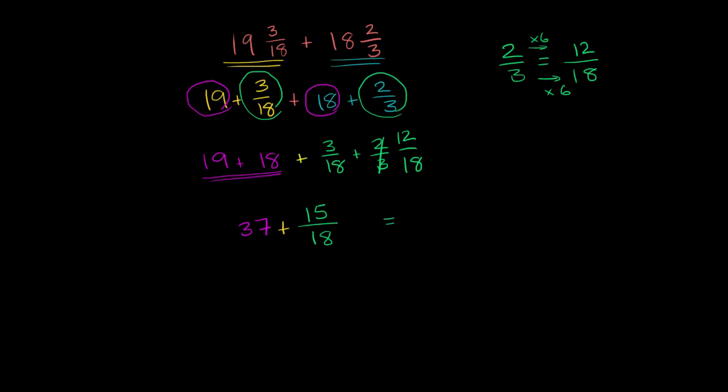And so expressing this as a mixed number, I get 37 and 15/18. And that's the right number, but we can simplify it even more. We can simplify the 15/18.